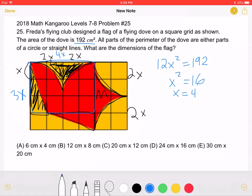Because the question is asking for the dimensions of the flag, we have 6X on this side, 4X on this side. And if we substitute 4 for X, we will get that 24 centimeters by 16 centimeters are the dimensions of the flag. We can see that this is answer choice D.